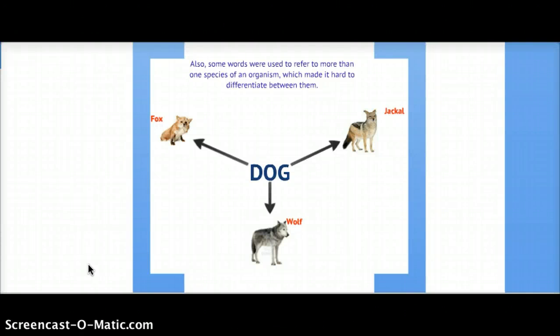For example, the word dog would be used to refer to an organism, but one wouldn't know if it referred to a jackal, a fox, or a wolf. This made scientists have difficulties differentiating between species.